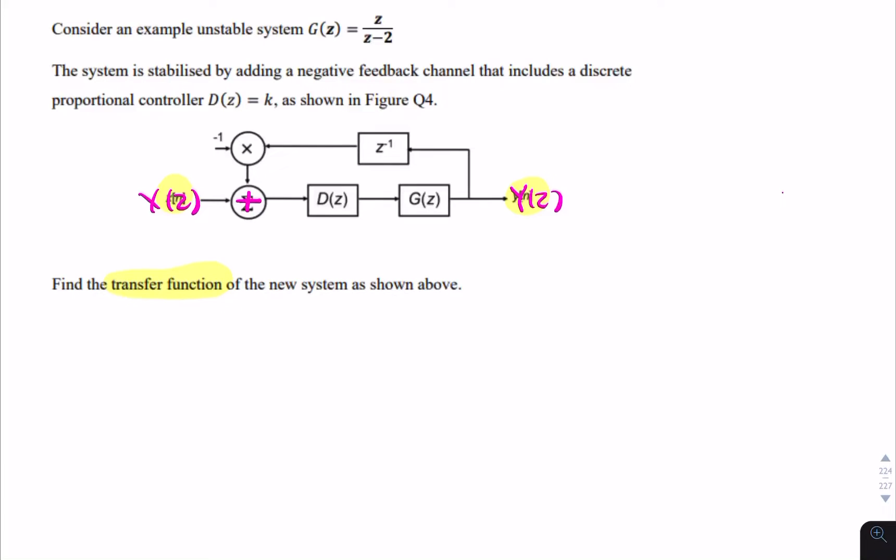So at this point here, what we have is z to the power minus 1 times y of z. So at this point here, what we should have is this plus this. But there's a minus sign here, so it's actually the difference of the two. So we can say that what we have here should be x of z minus z to the power minus 1 y of z.